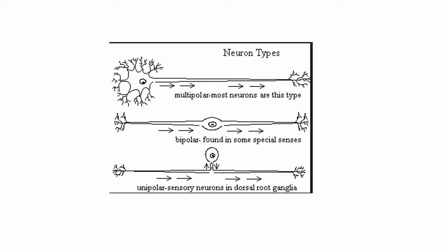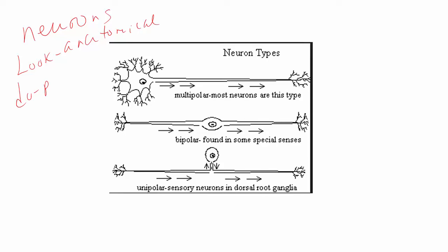The first thing to know when you're talking about your lab: when you think of a neuron, physiologists and anatomists love to classify. We can classify neurons — and I'm going with your lab guide, so you should have a lab guide attached to this video that you can follow along with. Neurons can be classified on what they look like, which is anatomical, and what they do, which is physiological.